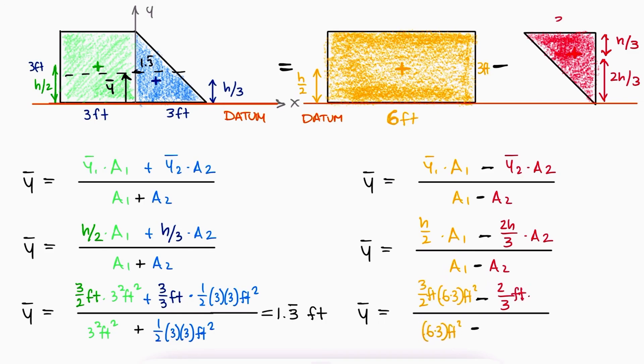Substituting all values, we see that the centroid for y, found by subtracting areas, results in the same number we got when adding the areas.